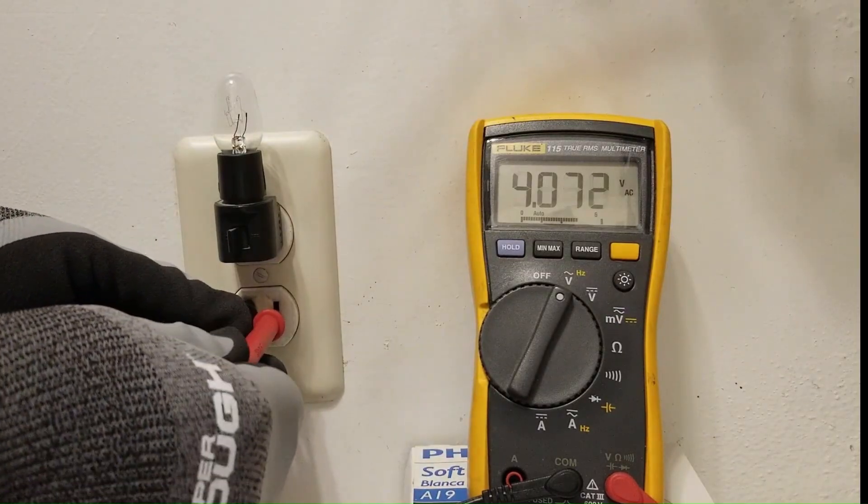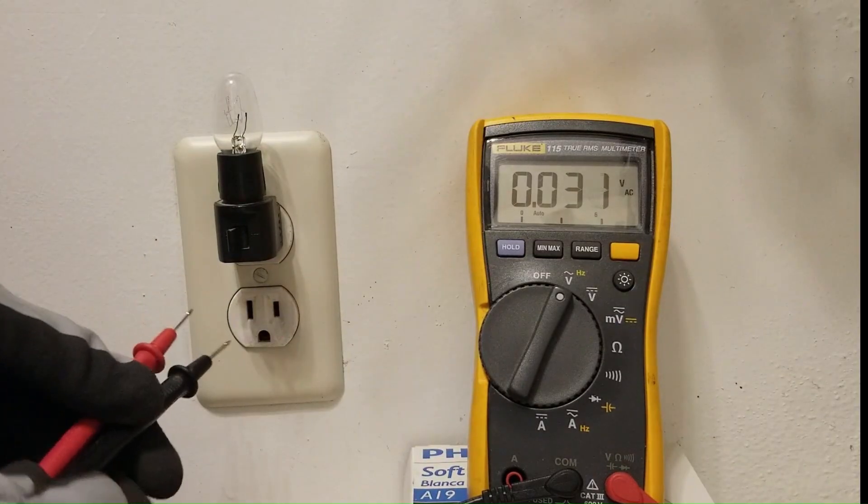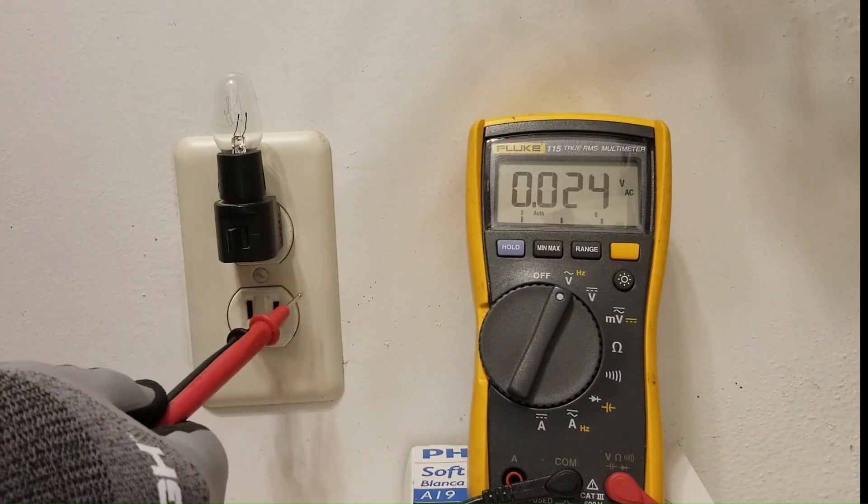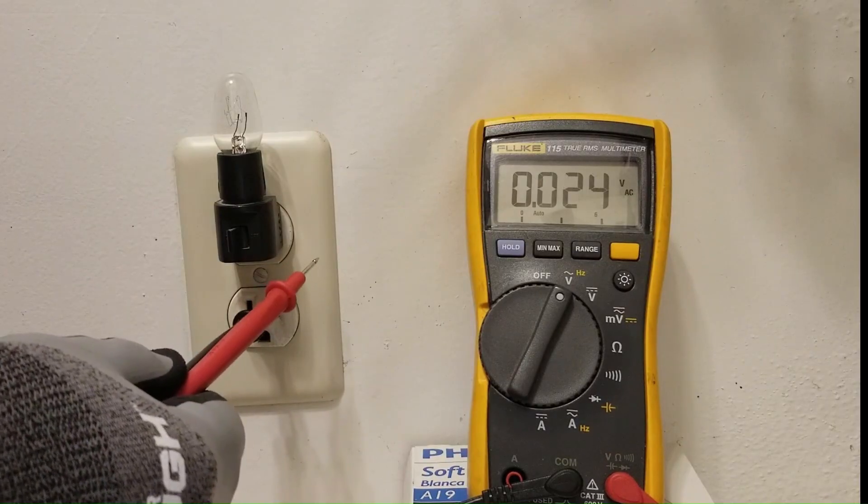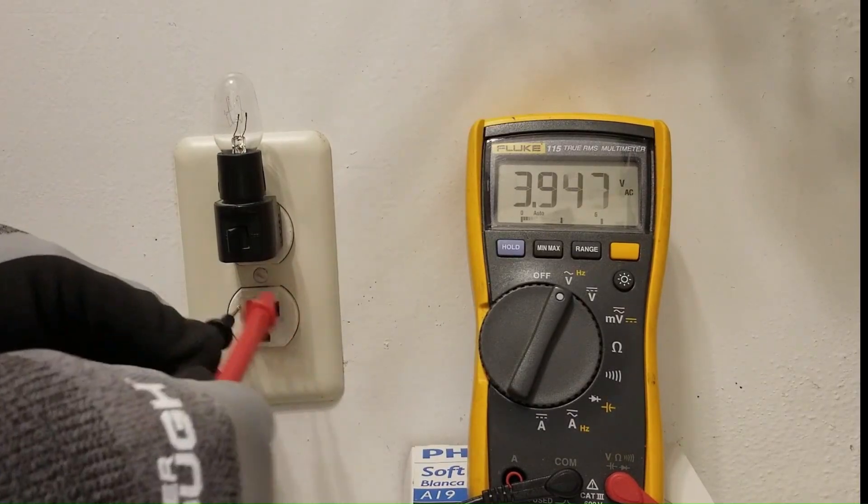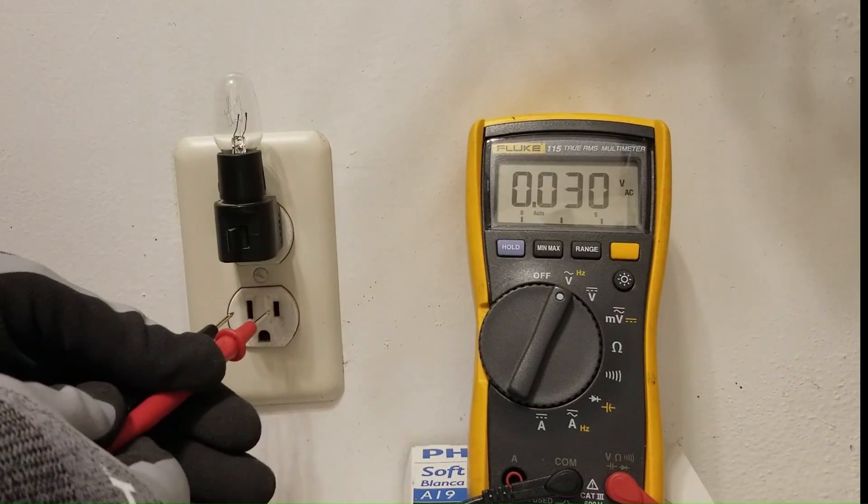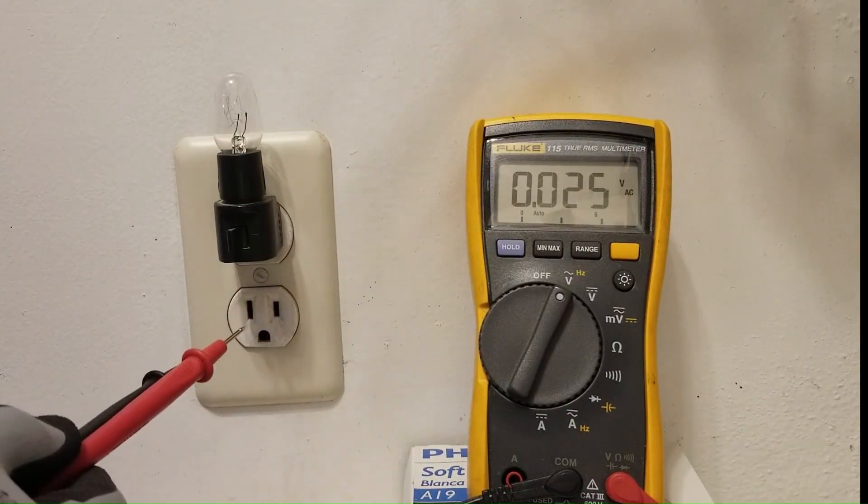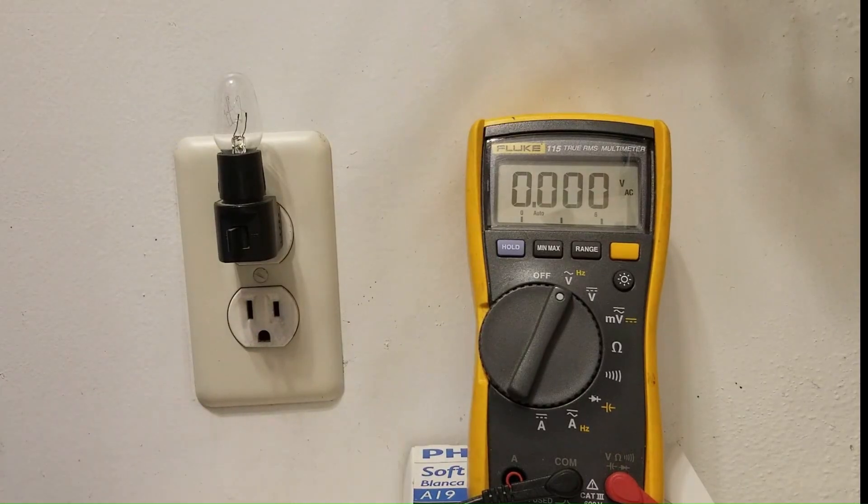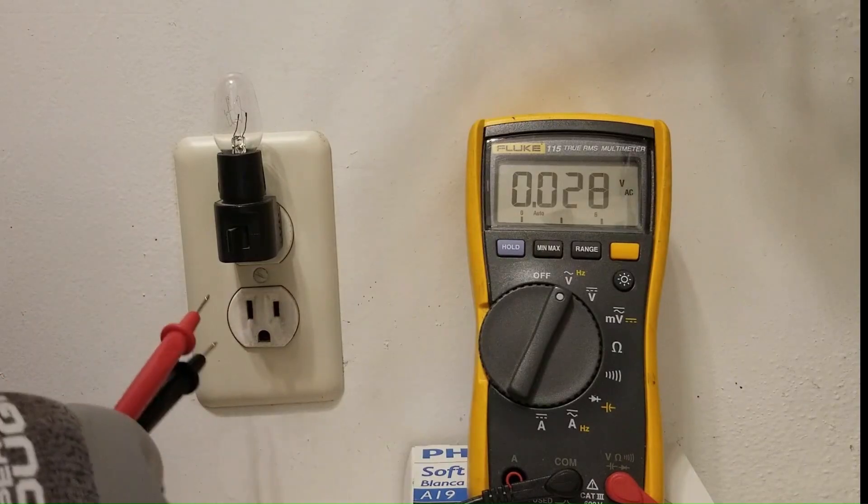So if we have a floating neutral or loose neutral, that neutral is going to go up to the level of hot because if hot is okay, it's going to stay at 120 volts. And if the difference between hot and neutral is only four volts, then that would mean that neutral is at somewhere around 116 volts. Neutral should always be at zero volts, very close to zero volts, give or take a few tenths of a volt.